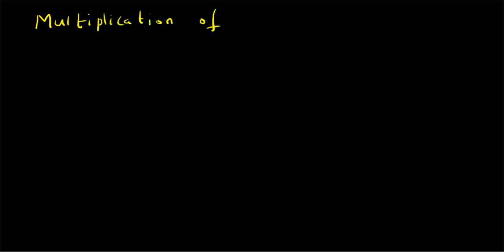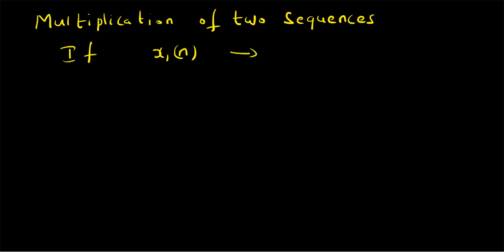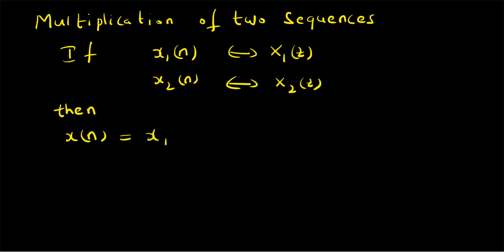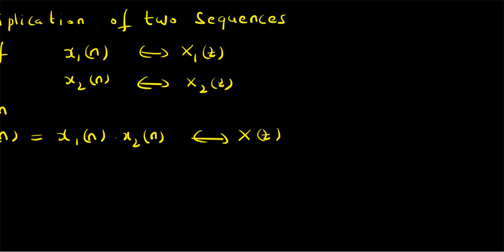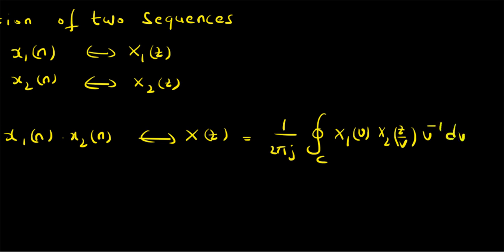So multiplication of two sequences: if we have signals x1(n) and x2(n), where x1(n) has Z transform X1(z) and x2(n) has Z transform X2(z), then the sequence x(n) which is the product x1(n) multiplied by x2(n) will have a Z transform X(z) equal to (1/2πj) times a closed contour integral of X1(v) multiplied by X2(z/v) times v to the power minus 1, dv. That is the Z transform of a multiplication of two sequences.